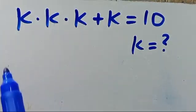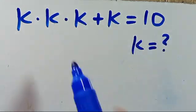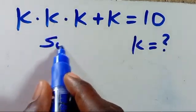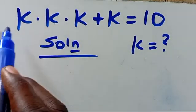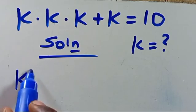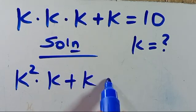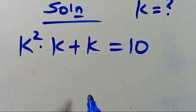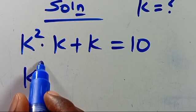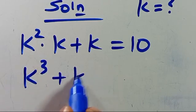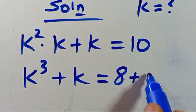What is the value of k? Given that k times k times k plus k equals 10, let's find the solution from here. So we have k times k, giving us k squared times k plus k equals 10. So from here, k squared times k gives us k to the power of 3 plus k equals 10, and we can write 10 as 8 plus 2.